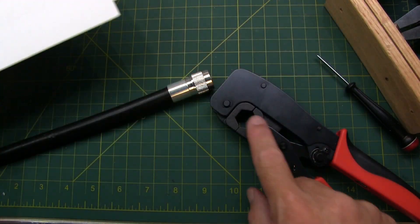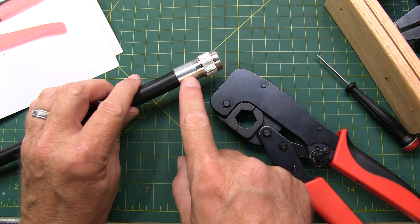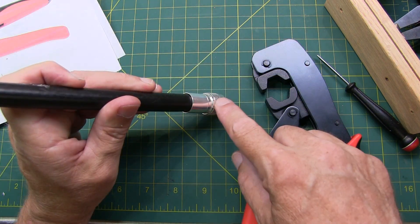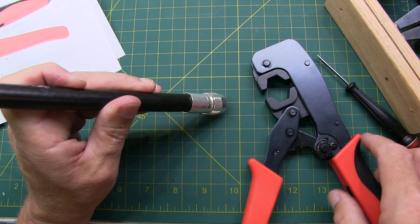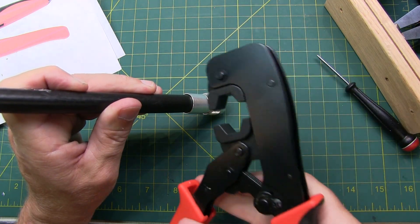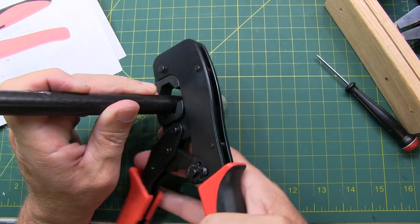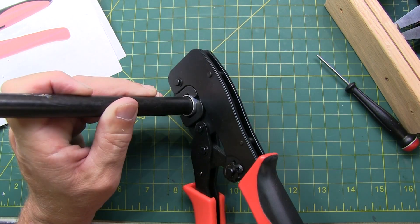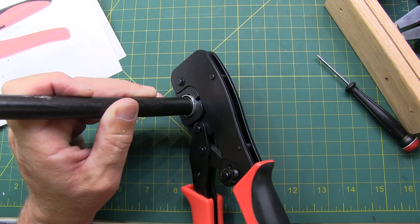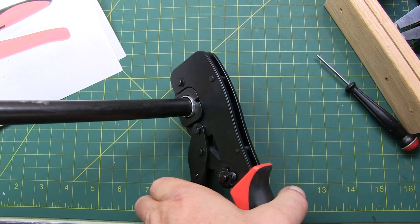And we use the matching crimping tool to crimp the ferrule. I'm keeping pressure on the connector onto the top of the table so that when I position the crimping tool, the connector doesn't back itself off. With the tool in place, we execute the crimp. Two-handed job.